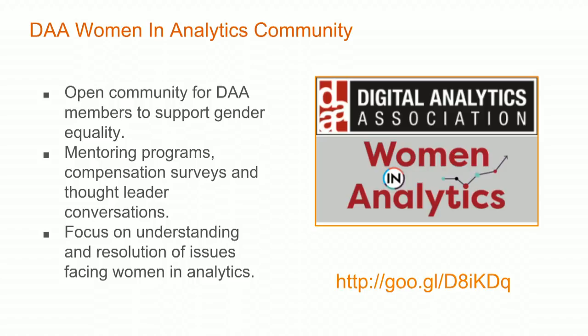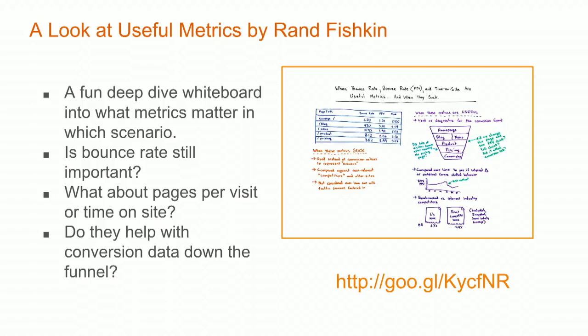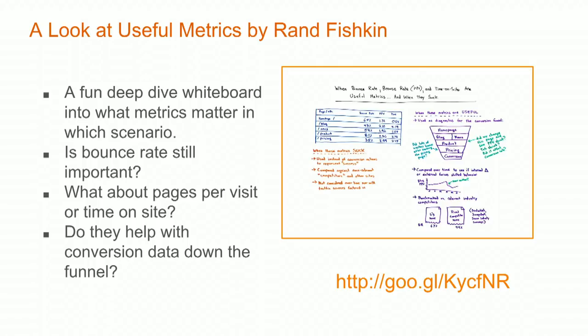Rand Fishkin, formerly of Moz and now of SparkToro, had a really fun deep dive whiteboard last week about what kind of metrics matter. Sometimes people get caught up asking whether bounce rate or pages per visit are low-quality or high-quality metrics. One thing he talked about is making sure that if you're collecting data like bounce rate or pages per visit, it's actually funneling toward conversion — that you understand there's real value in collecting the data, not just because you can, but because you should.